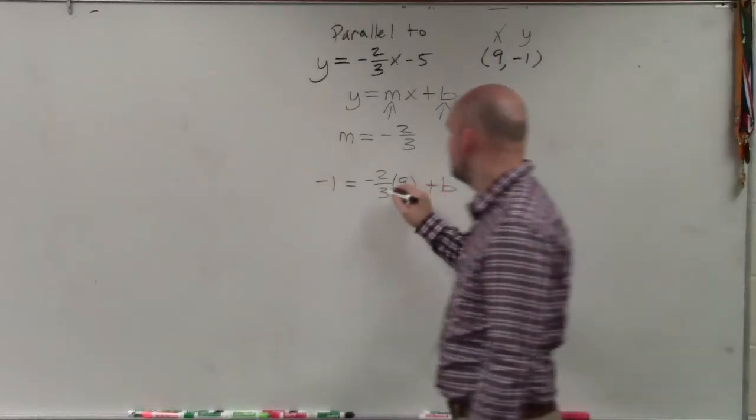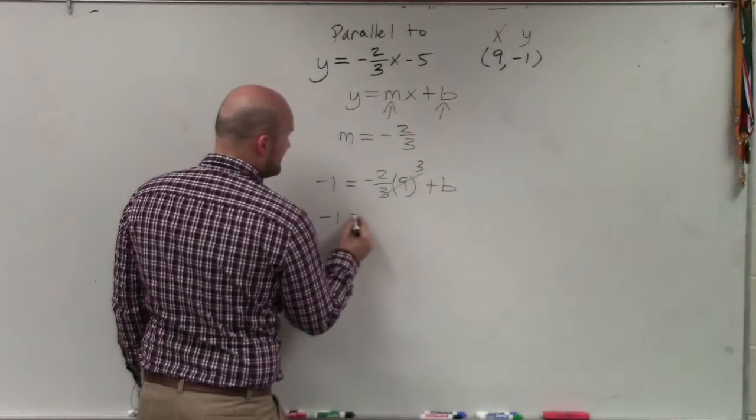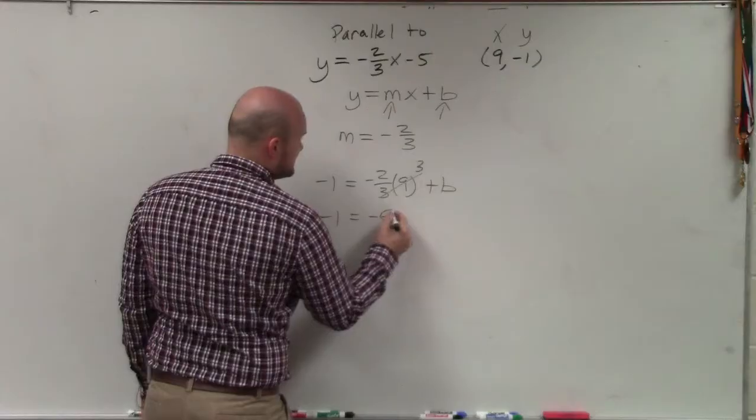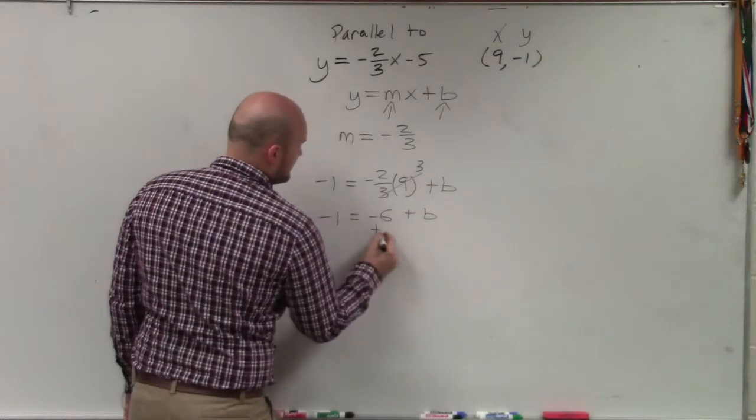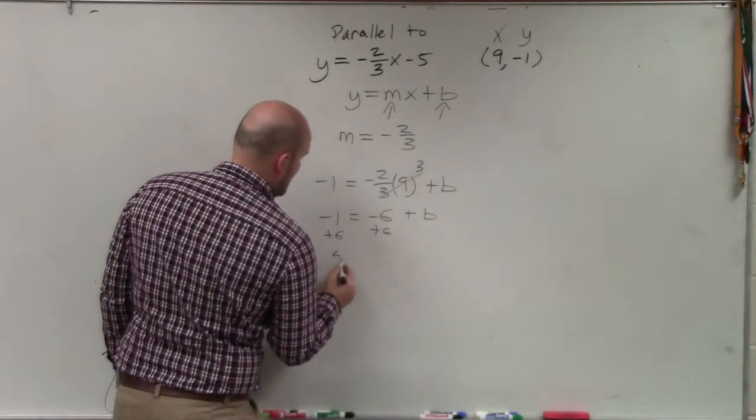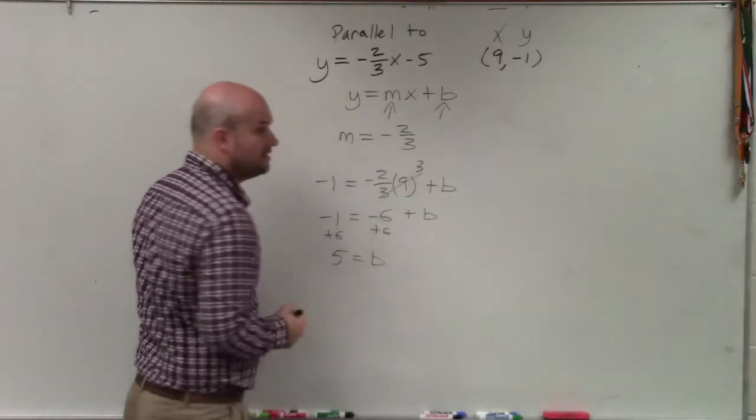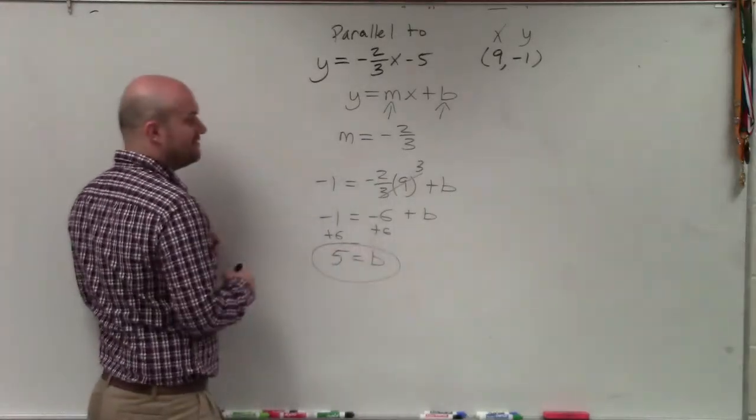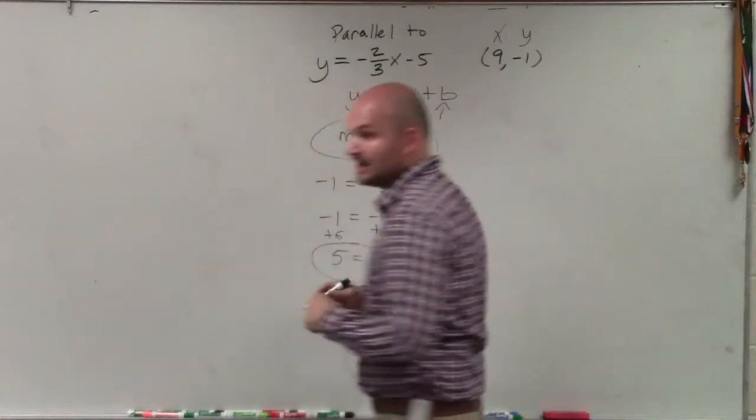So therefore, this simplifies to 3. I have negative 1, negative 2 times 3 is negative 6, plus b. Add 6 to both sides. I have positive 5 equals b. So now I know that b equals positive 5, m equals negative 2 thirds.